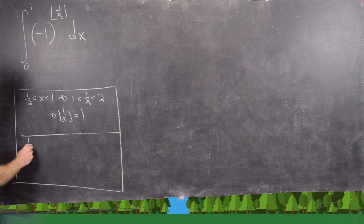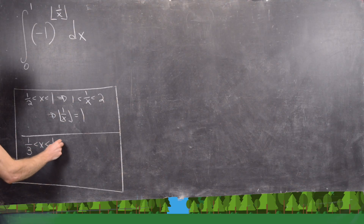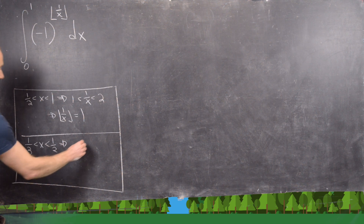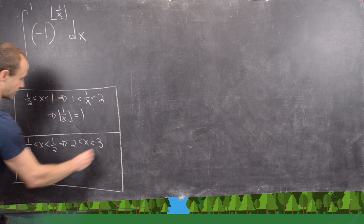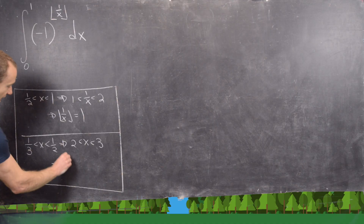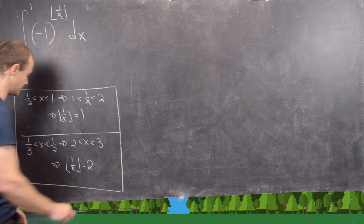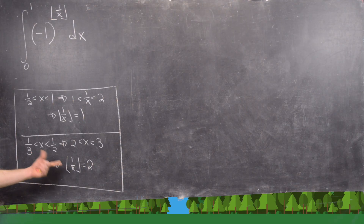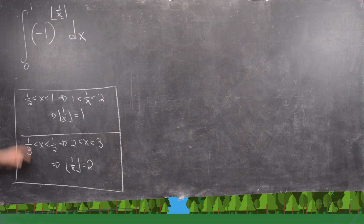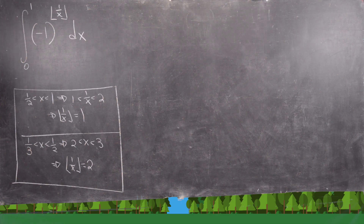Furthermore, if you take the subinterval 1/3 to 1/2, on this subinterval 1/x is between 2 and 3, which tells us that the floor of 1 over x equals 2. So on this subinterval the floor is a constant of 2. The main idea is to break the interval [0,1] up into infinitely many pieces where on those pieces this floor is constant. But that's not what we're going to do.